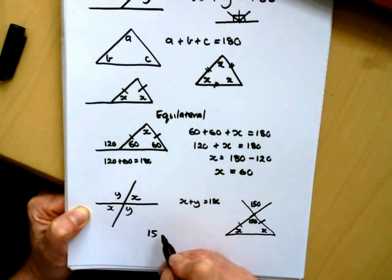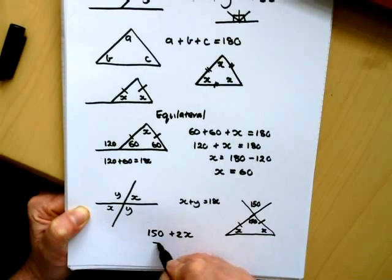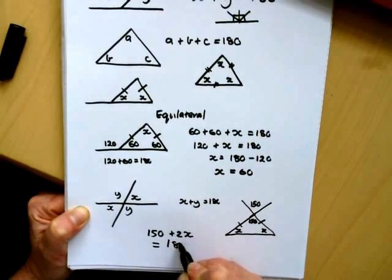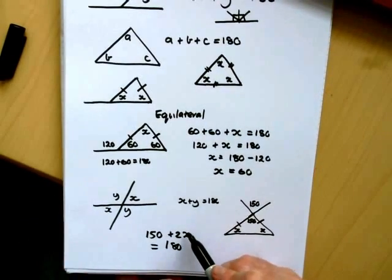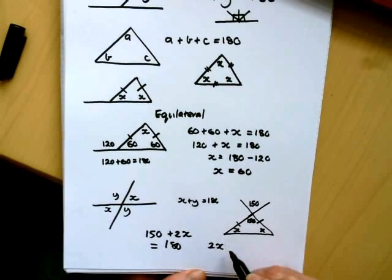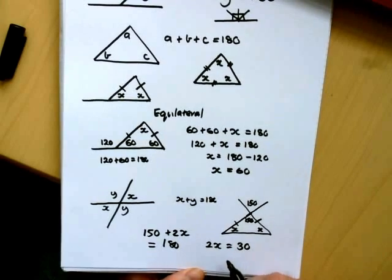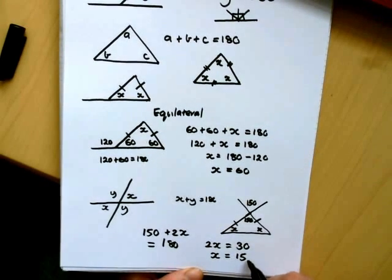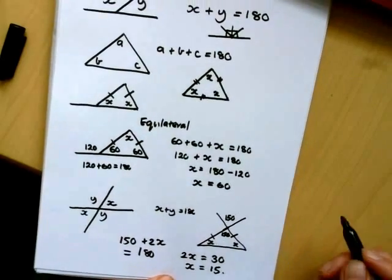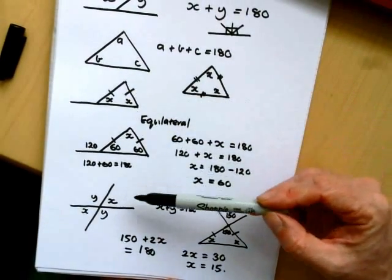So I know that 150 plus 2x equals 180. Now, you have to add 30 to 150 to get 180. So 2x must equal 30. And this means that x must equal 15 degrees. So that's angle facts 1, looking at angles on a straight line, angles in triangles, and opposite angles. I hope this has helped.